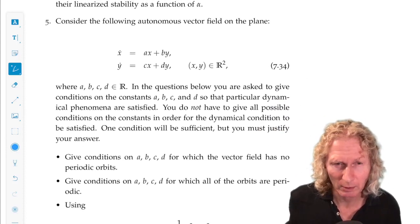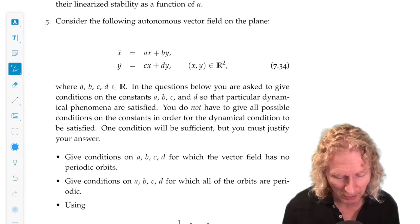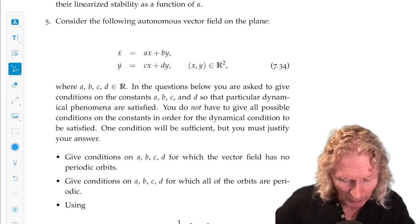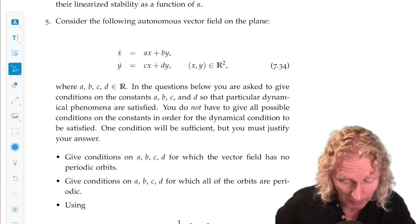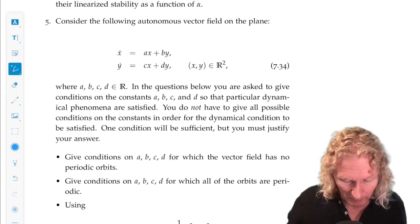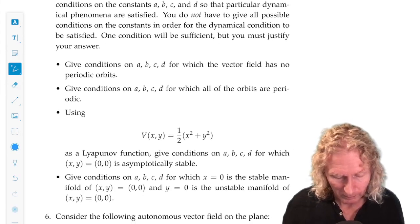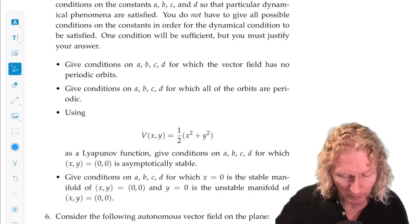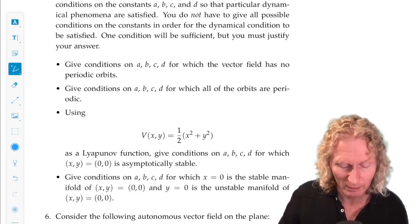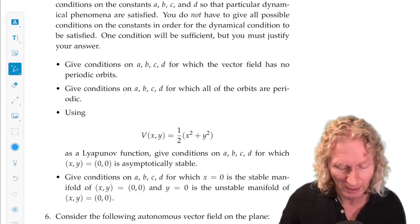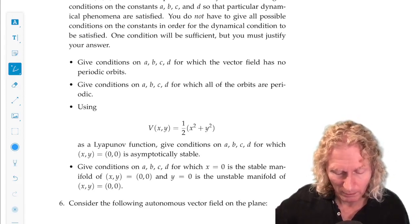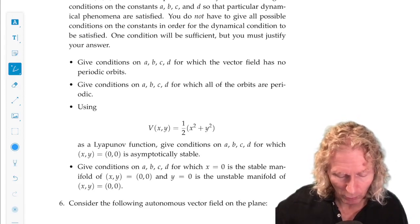Now, this is a fun problem because you can learn an awful lot from this. You have this linear vector field with the parameters ABCD that are real and arbitrary. And I want you to give conditions on ABCD for which the vector field has no periodic orbits. And we kind of did this for that particular problem early on. Give conditions on ABCD for which all of the orbits are periodic.